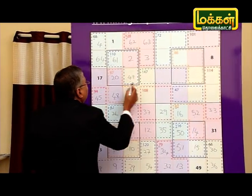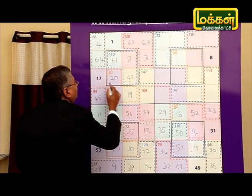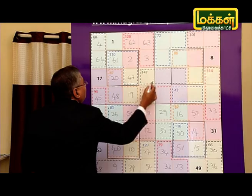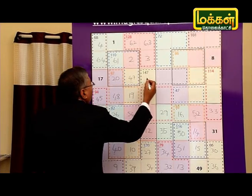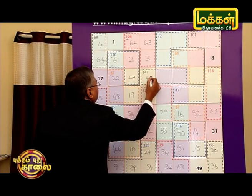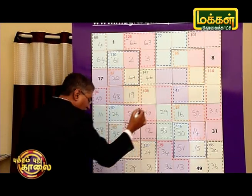If we have 3 numbers, the total is 84. With 4 numbers, the total is 130. So, 130 minus 84 is 46.